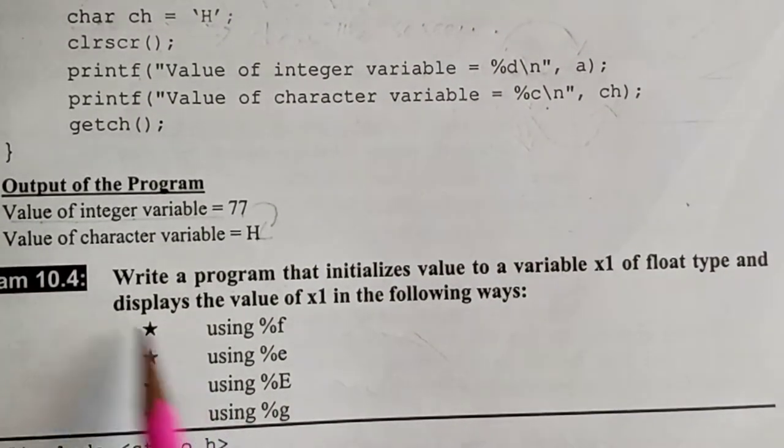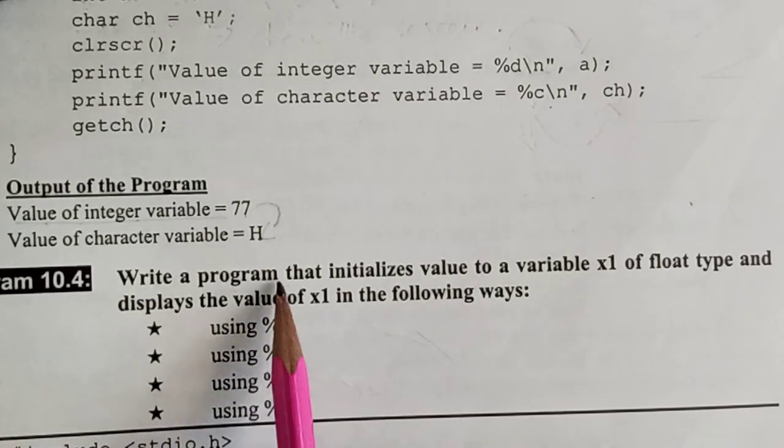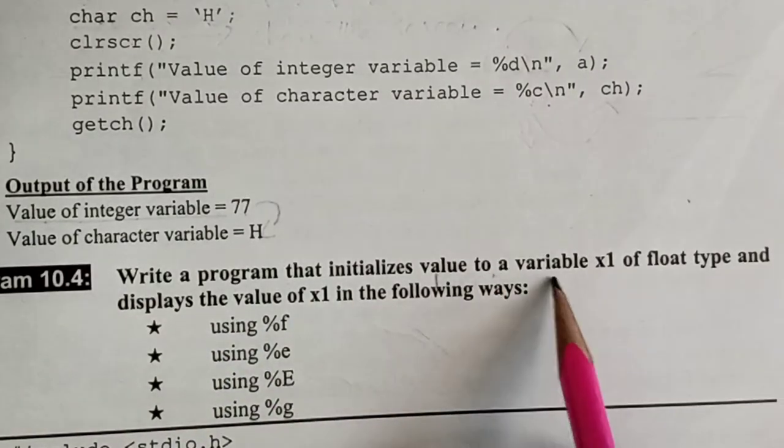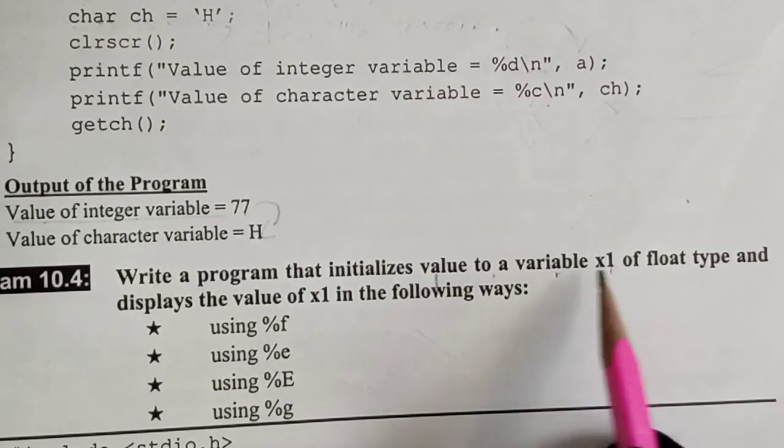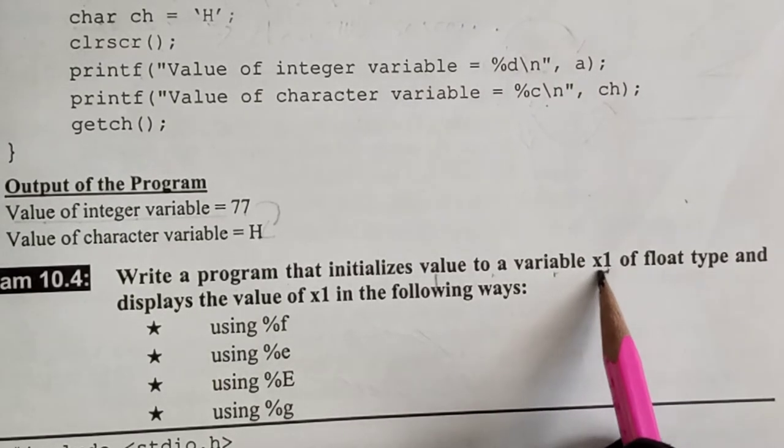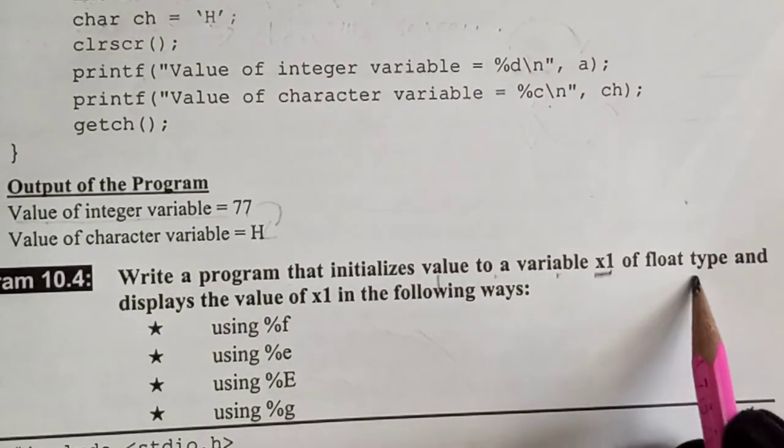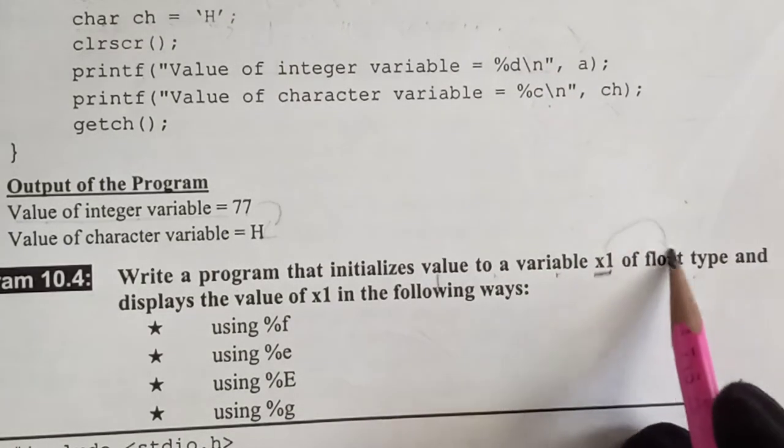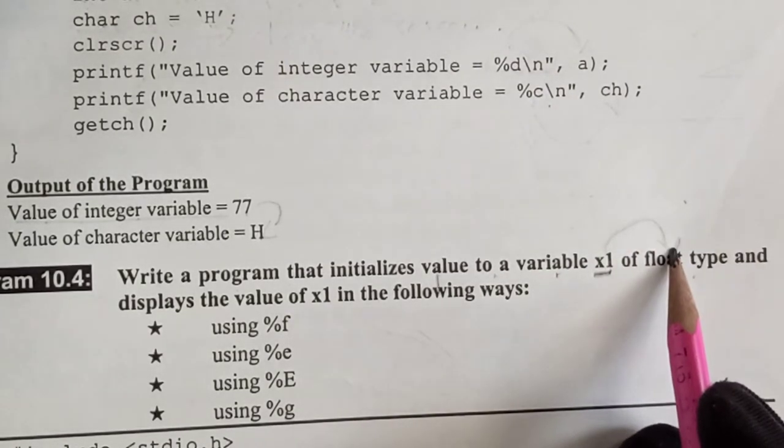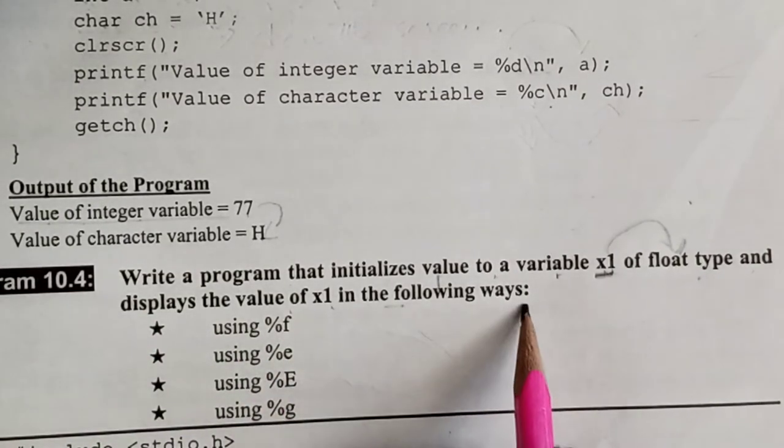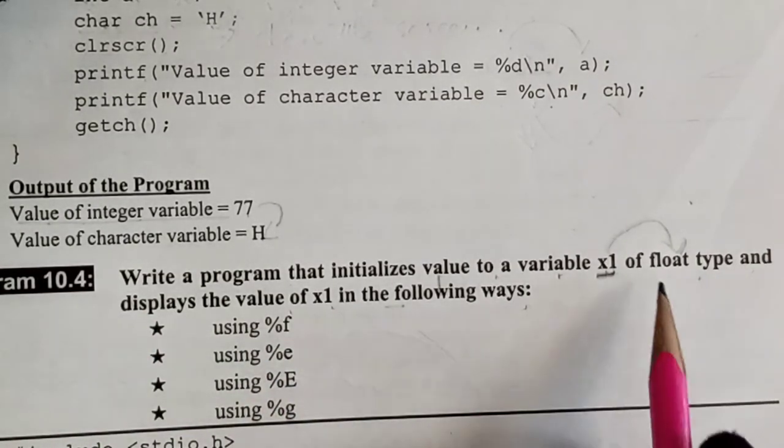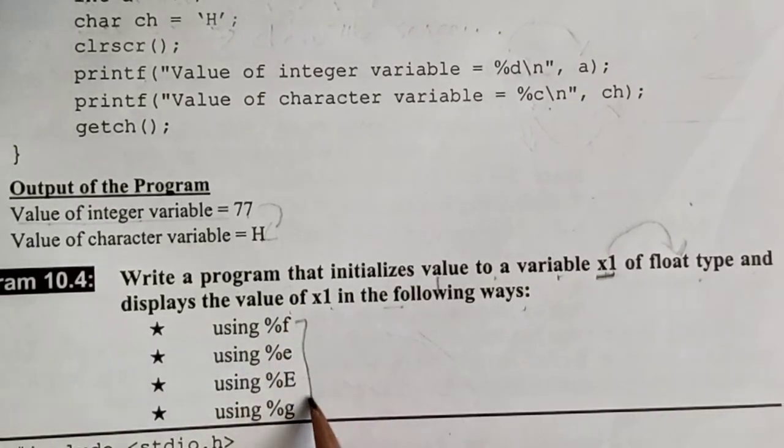What do you have to do? You have to write a program that initializes a variable x1. Now we have to declare a variable. We will give a variable of float type. What is the type? Float. When we initialize it, we will write float x1 and display the value of x1 in the following ways.